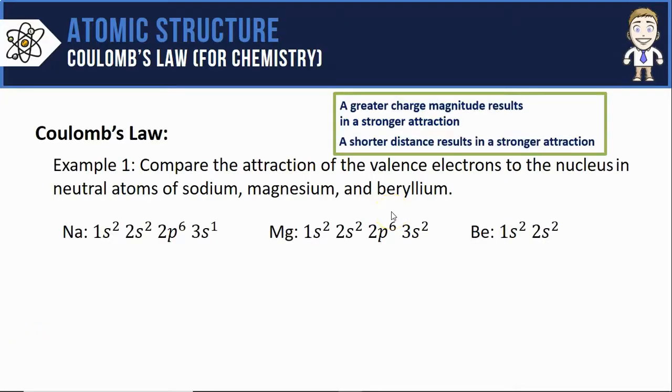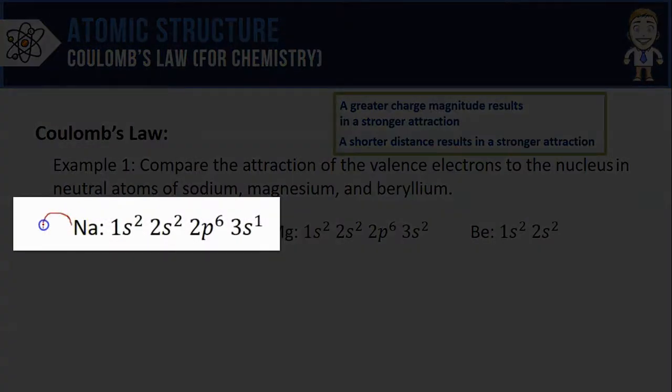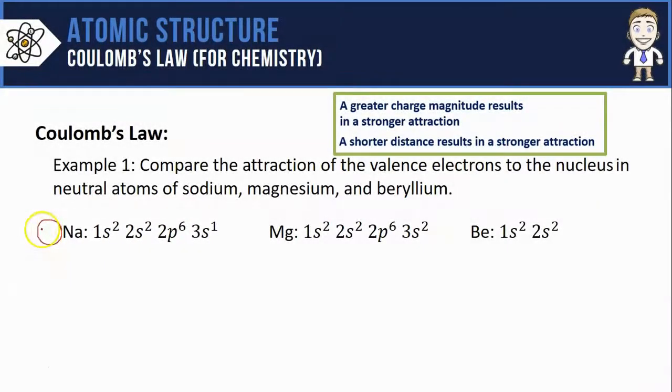Next we can start to analyze the attraction based on these two factors: distance and charge magnitude. Let's start with the distance factor, and to do this I like to draw in a little visual aid to help see where the nucleus might be relative to the first, second, and third energy level. So I'm going to draw a little positive nucleus to the left of each configuration and label it with the nuclear charge.